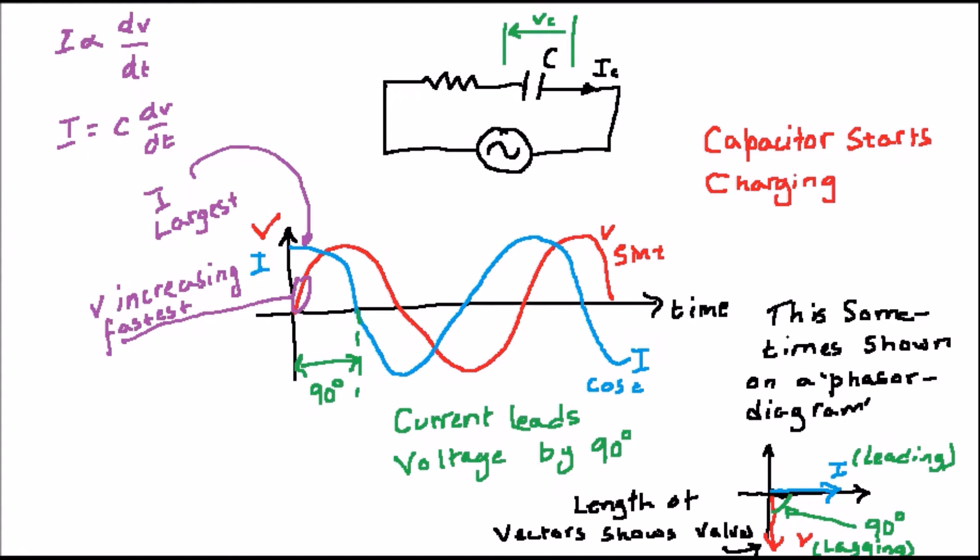The relationship between I and V is sometimes presented on a diagram called a phasor diagram, which shows the magnitude of I and V and the angle between them.